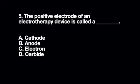The positive electrode of an electrotherapy device is called A. A. Cathode B. Anode C. Electron D. Carbide